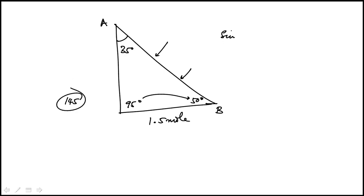So sine 35 over 1.5 is going to be sine 95 over AB. Therefore, AB is 1.5 sine 95 over sine 35.